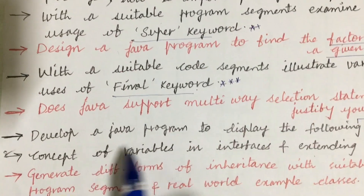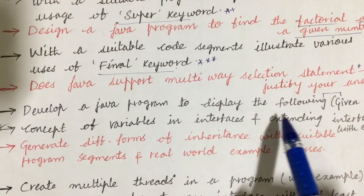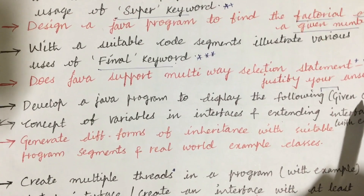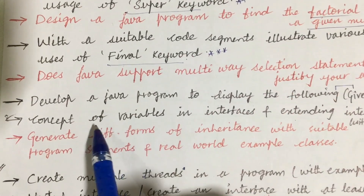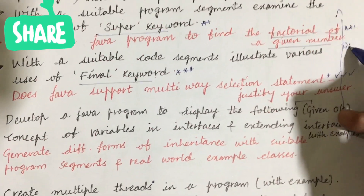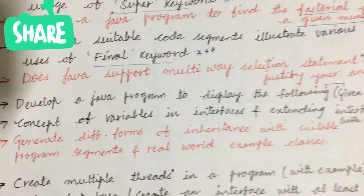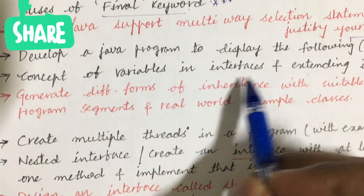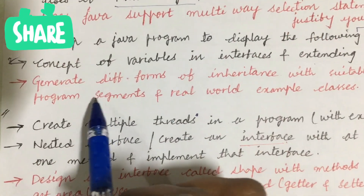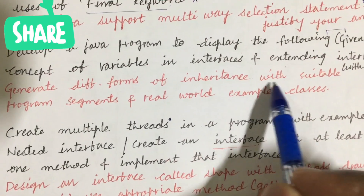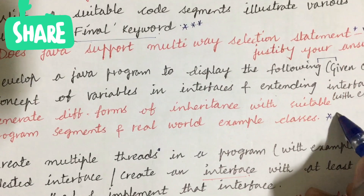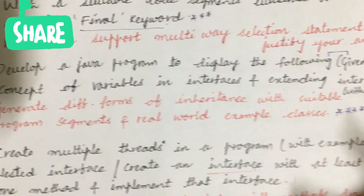Develop a Java program to display a given output — an output will be given and you are supposed to write the program. Questions from this part will be 2A as well as 2B. Later: the concept of variables in interfaces, extending interfaces with an example, and generating different forms of inheritance with suitable program segments and real-world example classes — this is also one of the important questions.